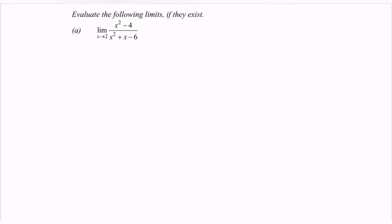Here are the examples for the indeterminate form. First, evaluate the following limits if they exist for situation A: the limit when x approaches 2 for the function (x squared minus 4) over (x squared plus x minus 6).